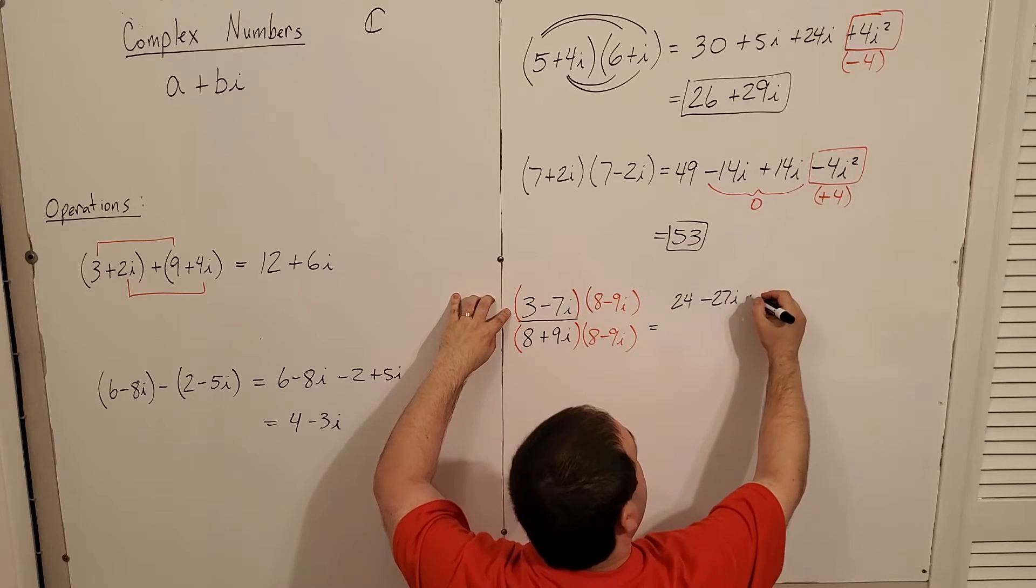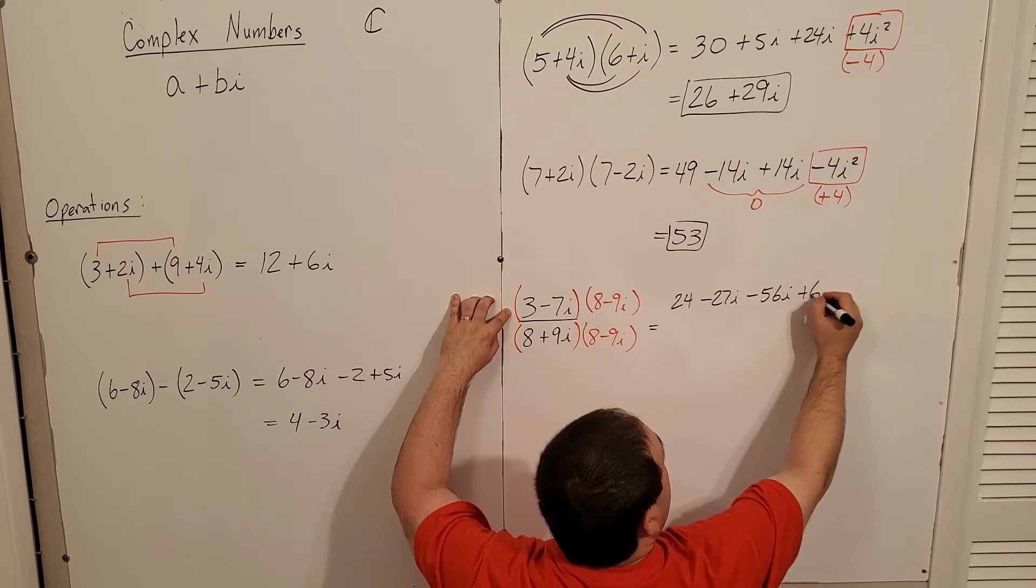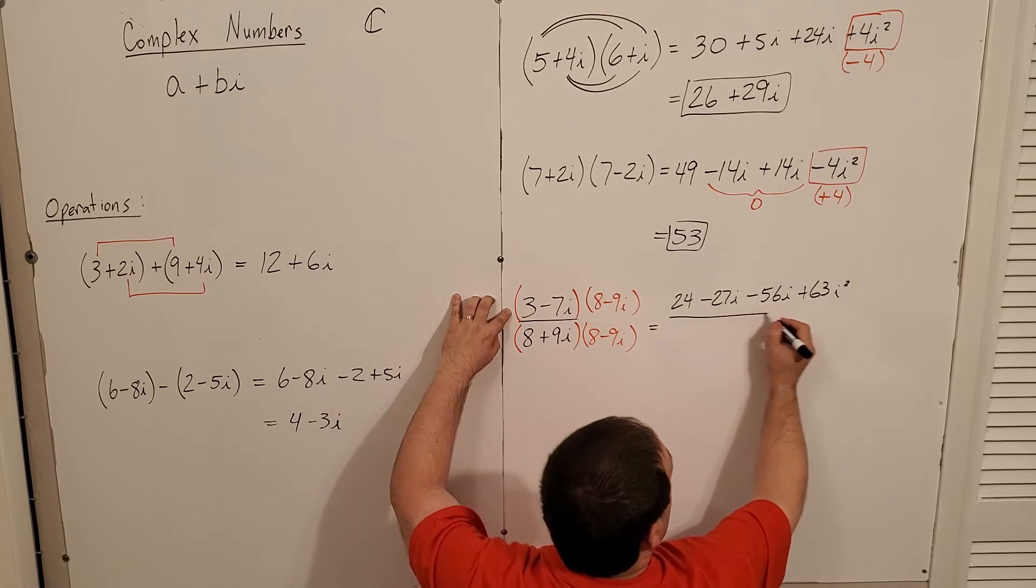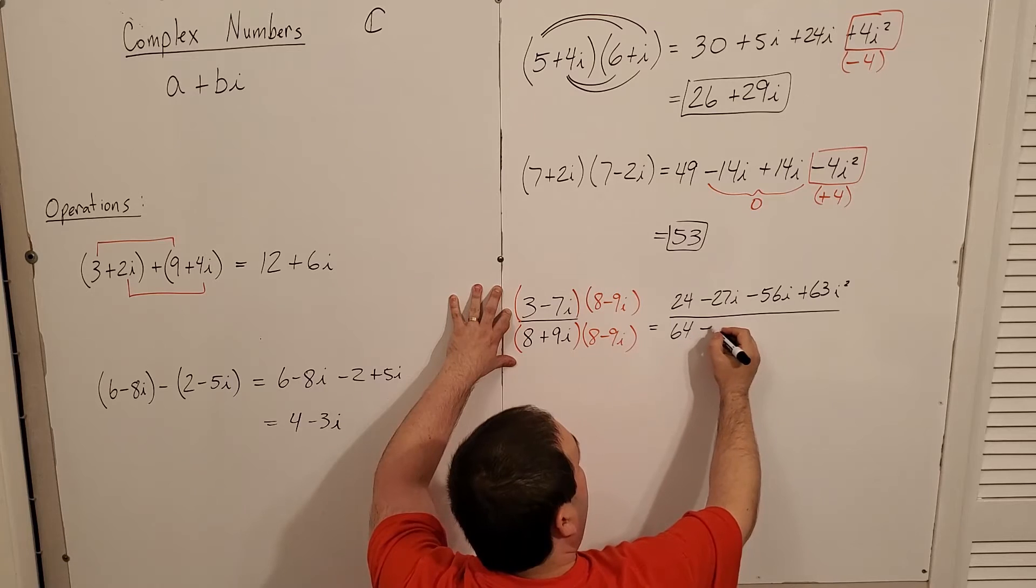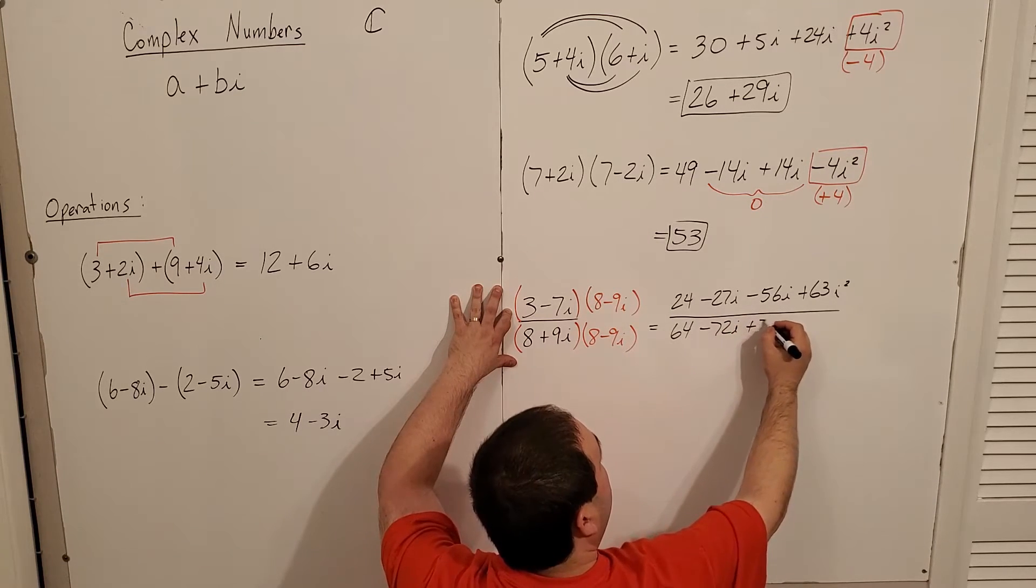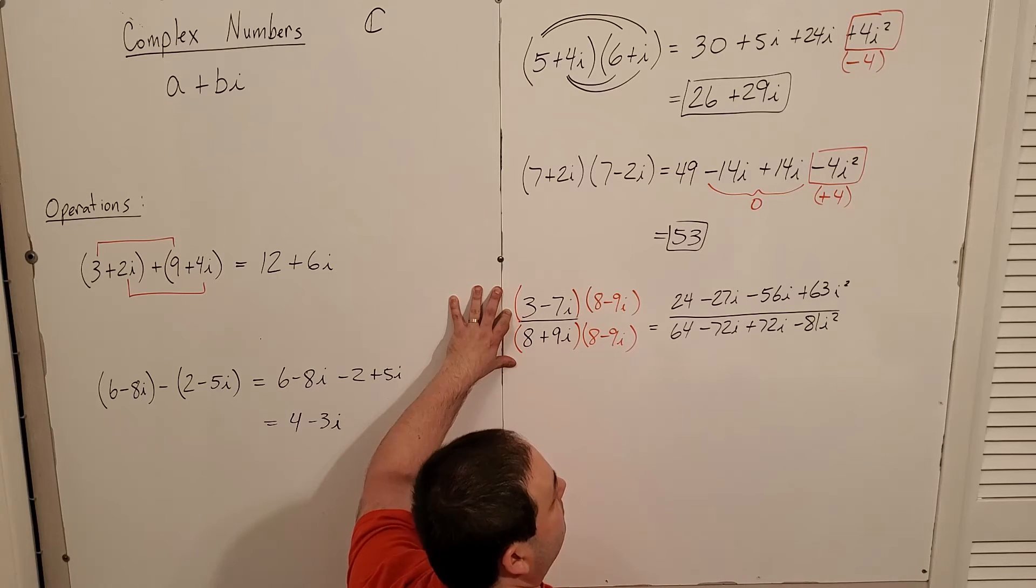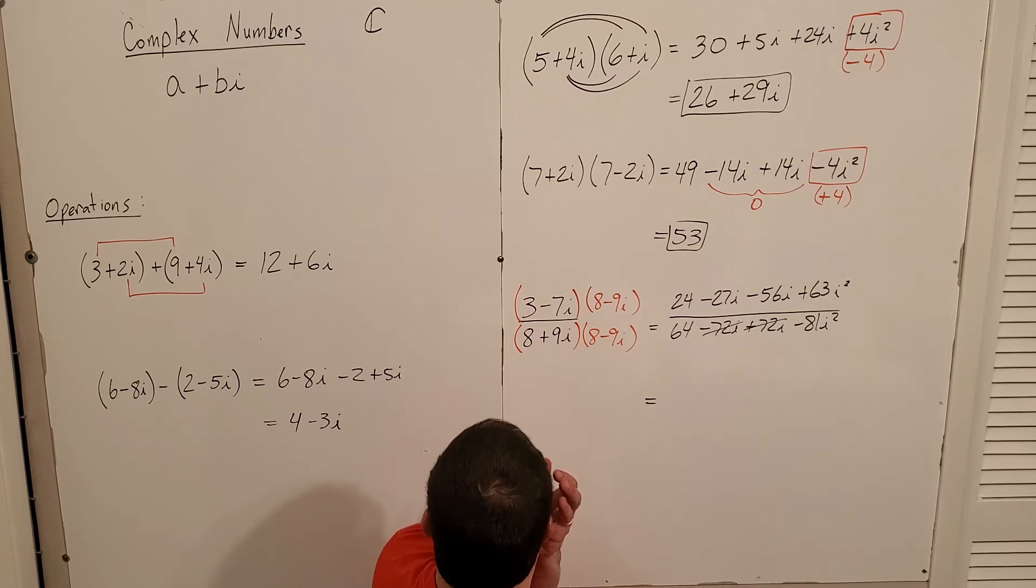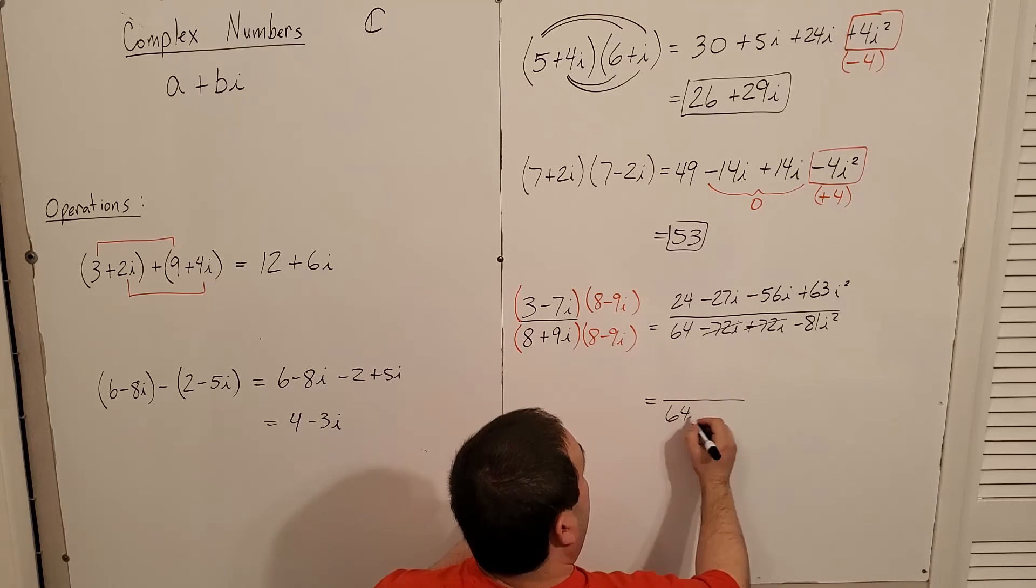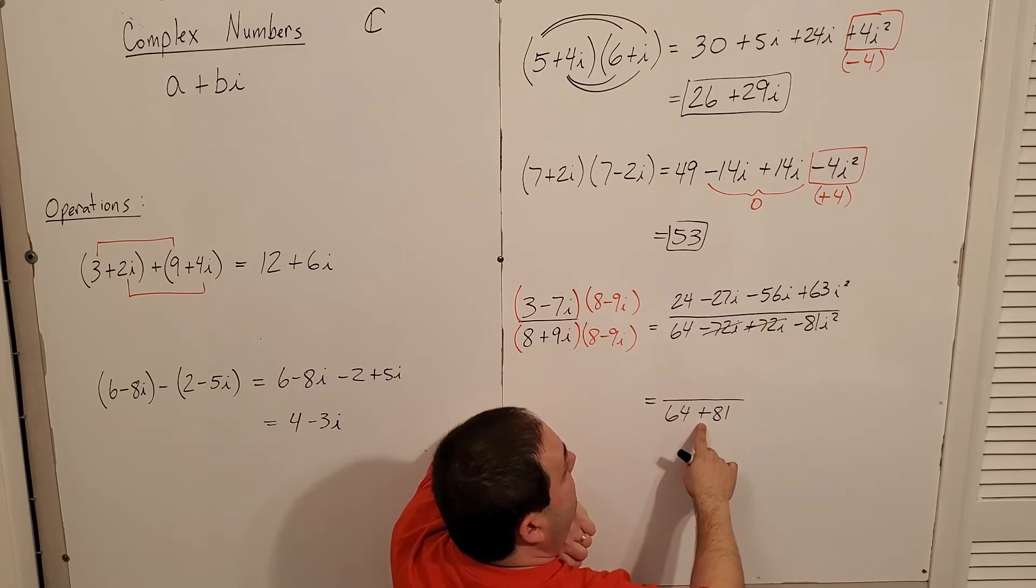This is equal to 3 times 8 is 24 times negative 9i is minus 27i. Negative 7i times 8 is negative 56i. And negative 7i times negative 9i would be positive 63i squared. In the bottom, I'll have 64 minus 72i plus 72i and negative 81i squared. These two are going to be zeroed out. My denominator is going to be 64 plus 81, because i squared is negative 1.